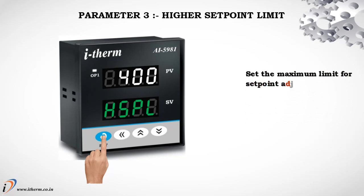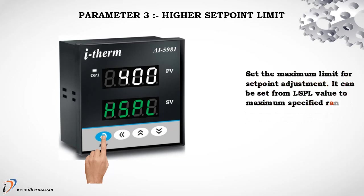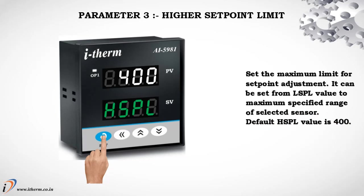Parameter 3: Higher Set Point Limit. Set the maximum limit for set point adjustment. It can be set from the LSP value to the maximum specified range of the selected sensor. Default HSP value is 400.